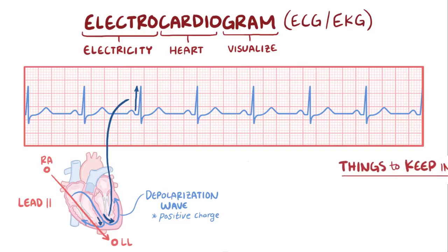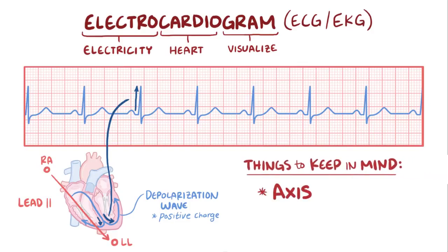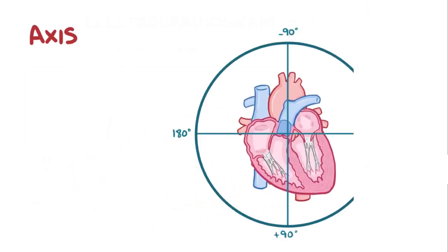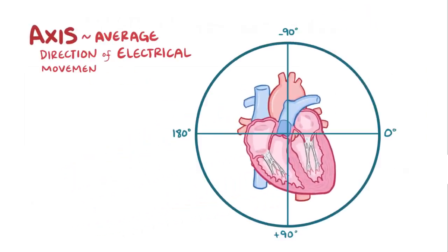To read an ECG, there are a few key elements to keep in mind, and one of them includes figuring out the axis. The axis of an ECG is the average direction of electrical movement through the heart during a depolarization.